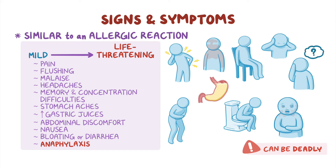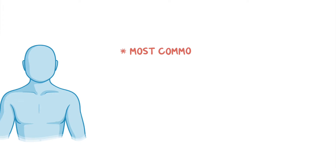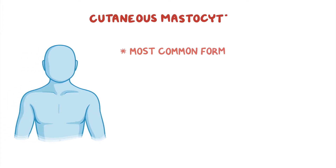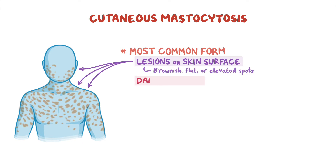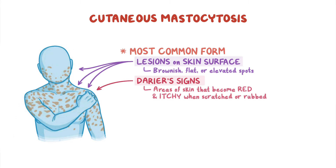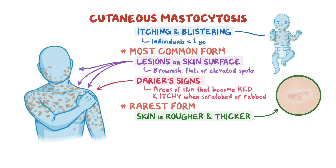Within each main category of mastocytosis, there are additional forms, whose distinction can be based on more specific signs and symptoms. For example, in the most common form of cutaneous mastocytosis, lesions appear on the skin's surface as brownish, flat, or elevated spots. They may be surrounded by Darier's sign, which are areas of skin that become red and itchy when scratched or rubbed. In the rarest form, lesions aren't present but the skin is rougher and thicker. Itching and blistering may also occur in individuals who are less than one year old.